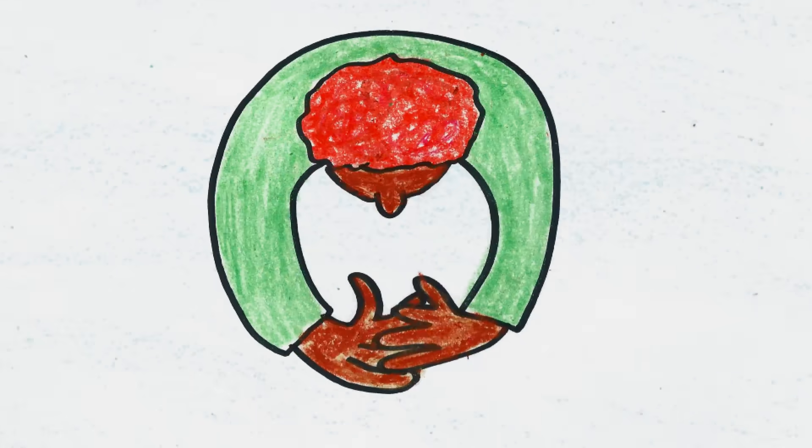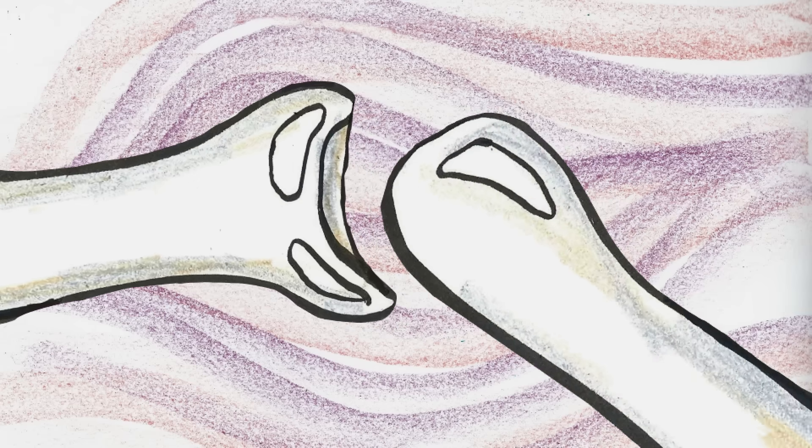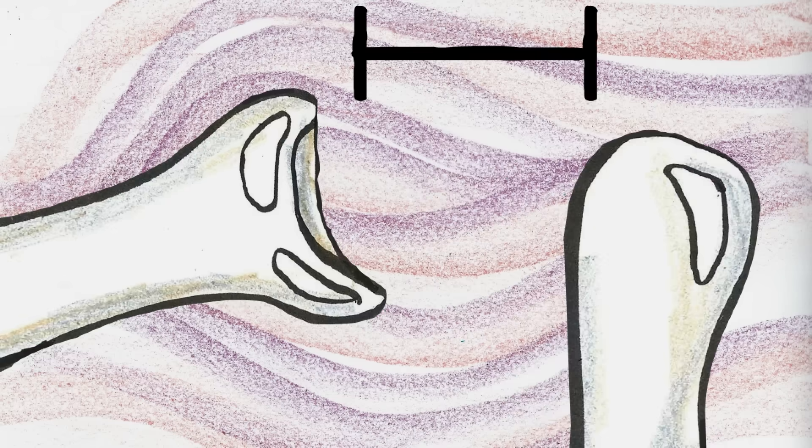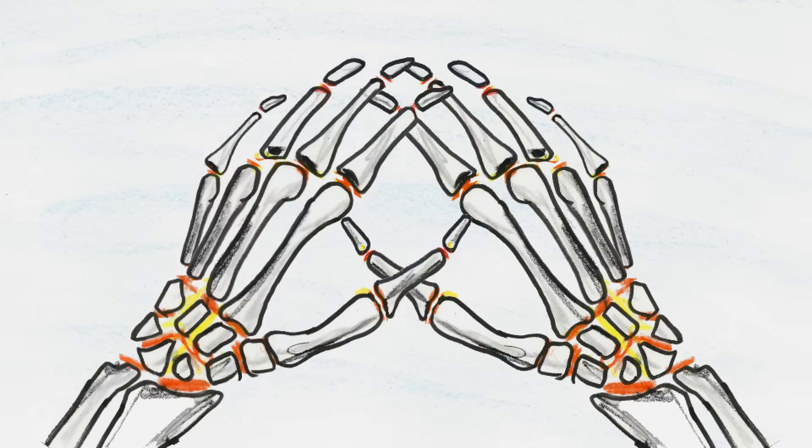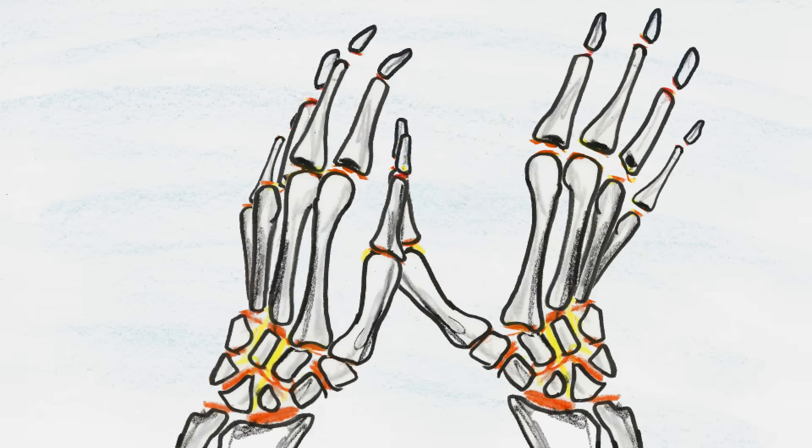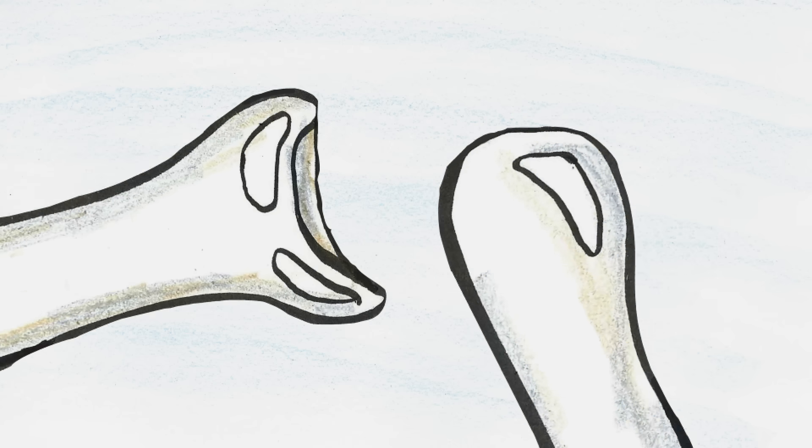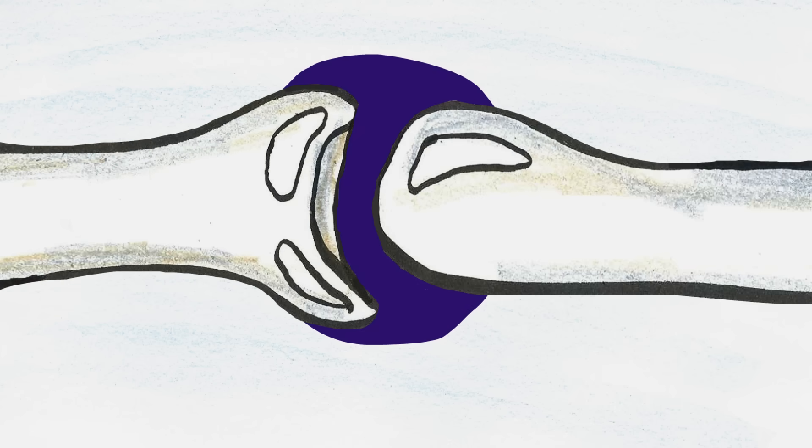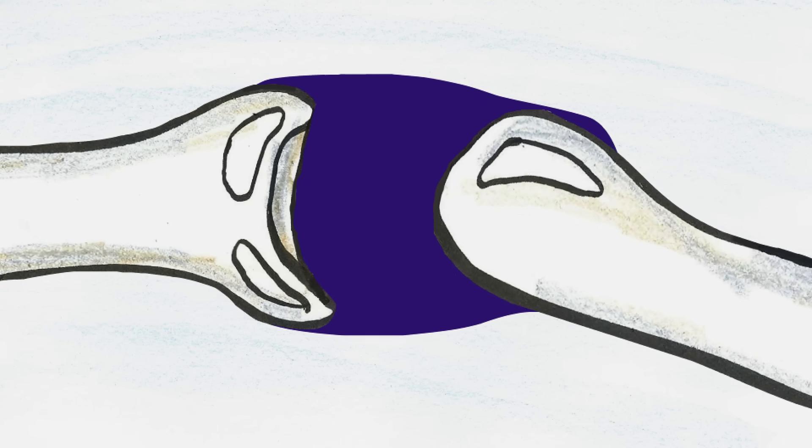Knuckle crackers know that to get that satisfying pop, you stretch the joint farther than it normally goes, by bending your fingers backwards, for example. When you do that, the bones move away from each other. The space between bones gets bigger, but the amount of synovial fluid stays constant.